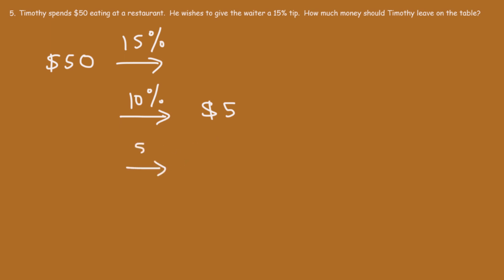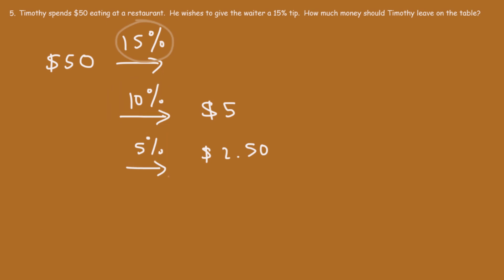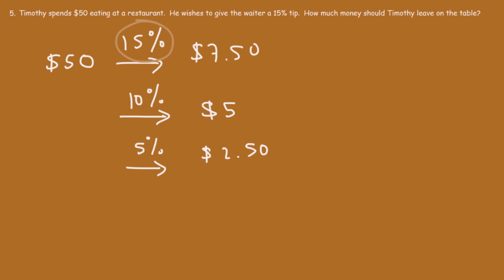If 10% is $5, what's 5%? We know that 5% is half of 10%, so 5% has to be half of $5. Half of $5 is $2.50. So 15% is the sum of 10% and 5%. 10% plus 5% is 15%, thus 15% will be $5 plus $2.50, which is $7.50. That's how you can mentally solve a simple percentage problem.